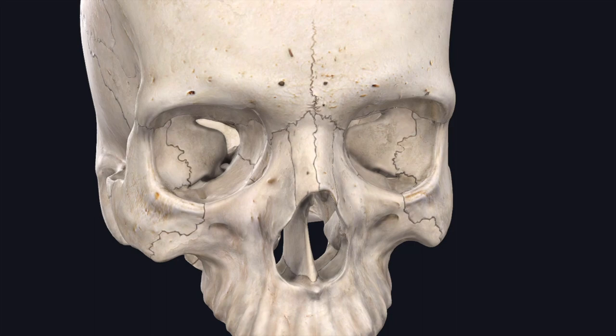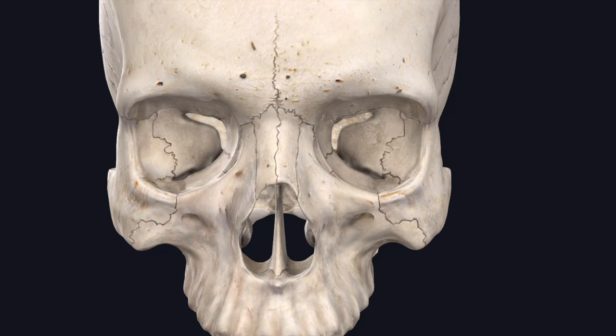Each orbit is a four-sided pyramid with an apex directed behind at the optic canal and the base is represented by the orbital margin. The medial walls of both orbits lie parallel to each other and are about 2.5 centimeters apart, separated by the nasal cavity.